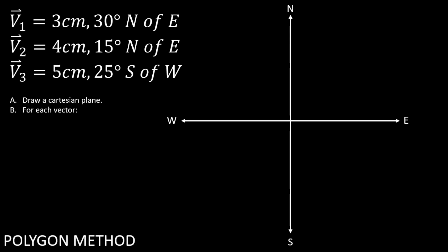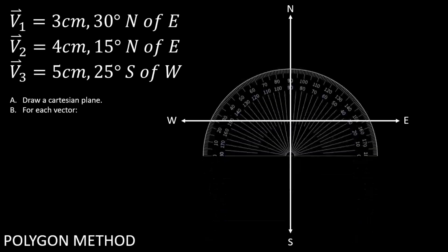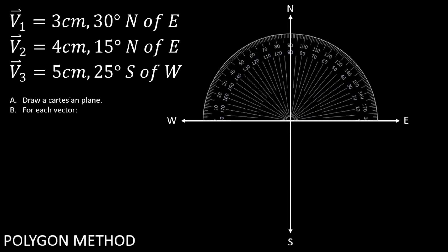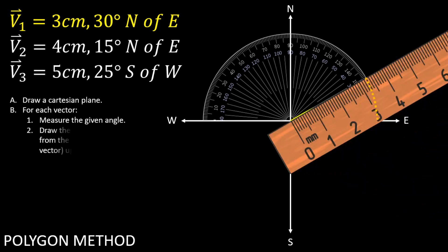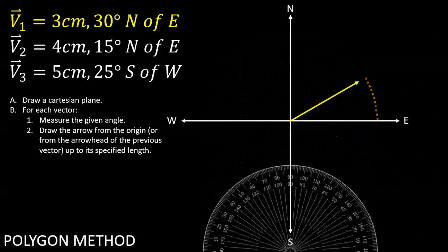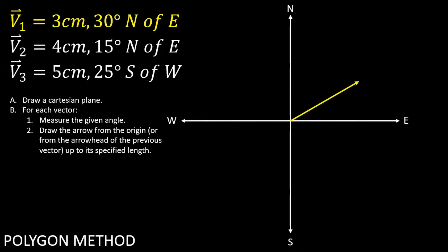We begin doing the polygon method by plotting the first vector. We do this by measuring 30 degrees from the east going northwards, then drawing a 3 cm long arrow from the origin. Drawing arrowheads is important because they indicate the final point for each vector.